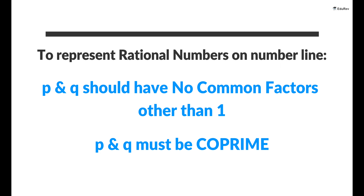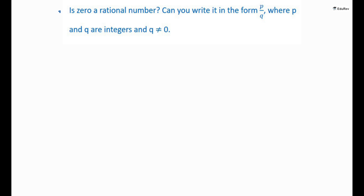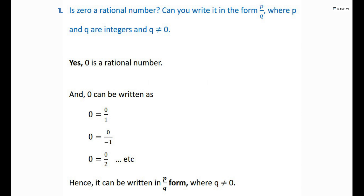That is, P and Q are co-prime. So, on the number line, among the infinitely many fractions equivalent to minus 5 by 7, we will choose it to represent all of them. Let's take an example. Is 0 a rational number? Can you write it in the form of P by Q where P and Q are integers and Q is not equal to 0? Yes, 0 is a rational number and it can be written in the form of P by Q.